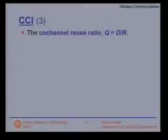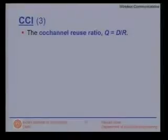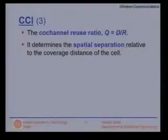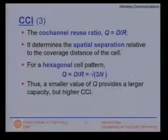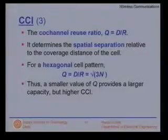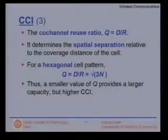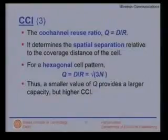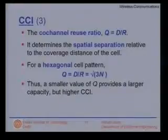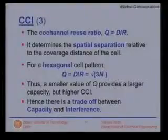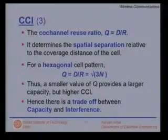The co-channel reuse ratio Q = D/R determines spatial separation relative to the coverage distance. For a hexagonal cell pattern, Q equals the square root of 3N. A smaller Q provides larger capacity but higher co-channel interference. The trade-off question is: how much do we gain in capacity versus lose in co-channel interference? We must carefully design the system based on this trade-off between capacity and interference.